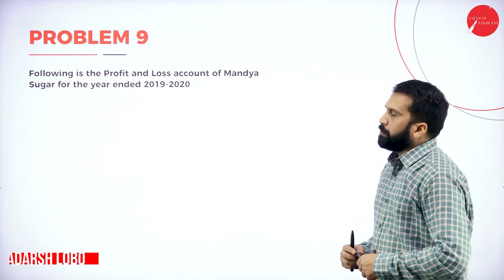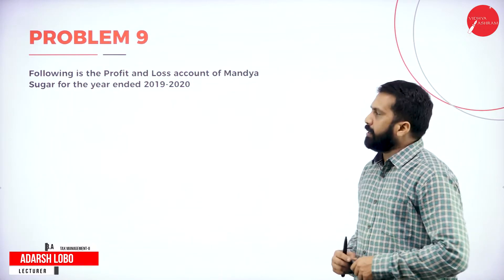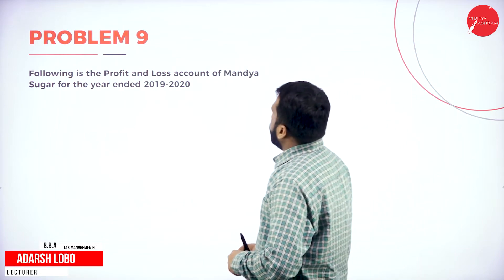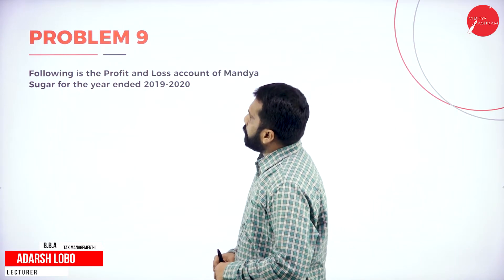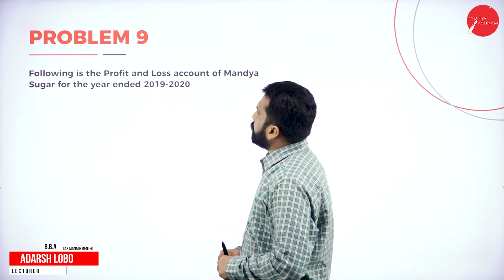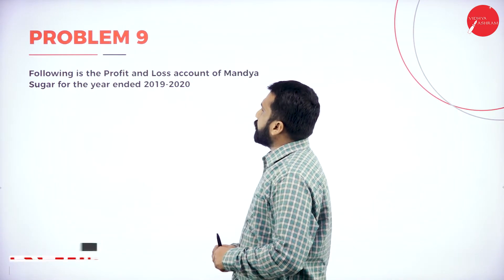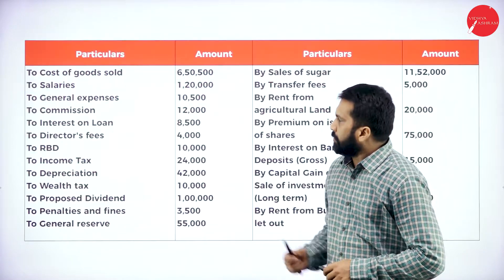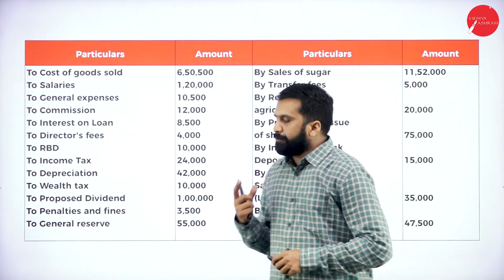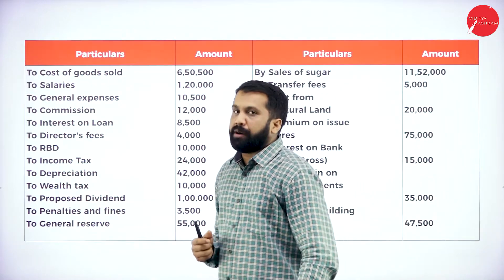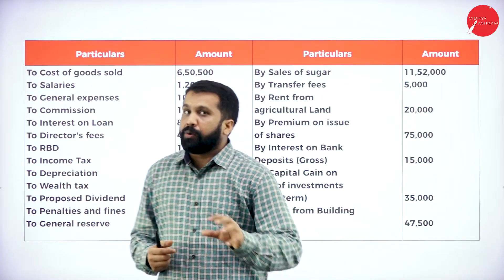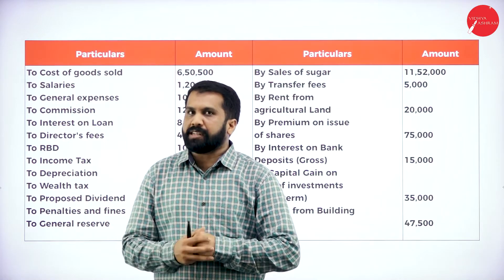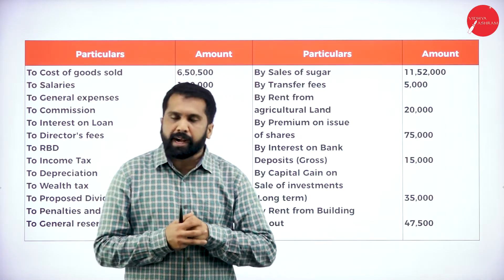Your problem number 9. From the profit and loss account of Mandia Sugar for the year ended 2019-2020, these are the informations we have. Remember, what are the disallowed items? Again, I will repeat which are disallowed.